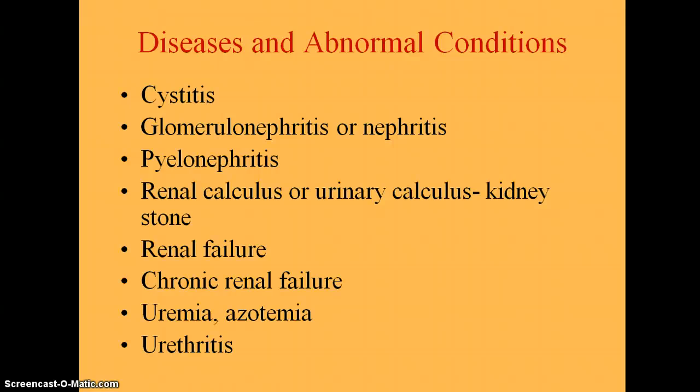The next condition is nephritis or glomerulonephritis, which is an inflammation of the glomerulus of the kidney. The glomerulus is part of the nephron. Acute glomerulonephritis might follow a streptococcal infection like strep throat, scarlet fever, or rheumatic fever. Symptoms include chills, fever, fatigue, edema, oliguria which is less than normal urine output, hematuria which is blood in the urine, or albuminuria which is protein in the urine.